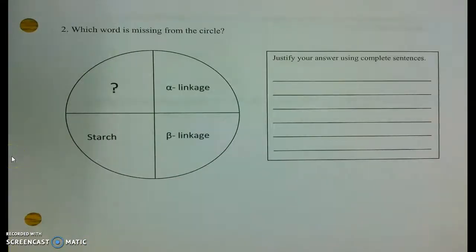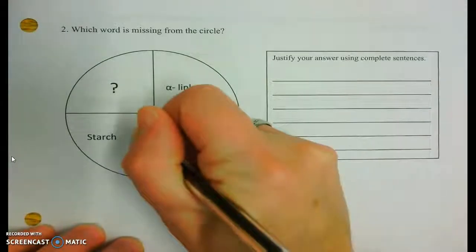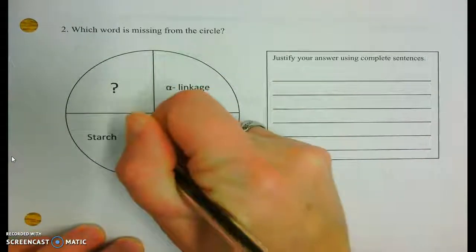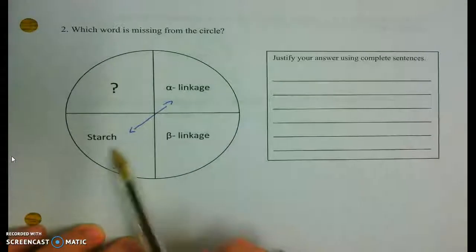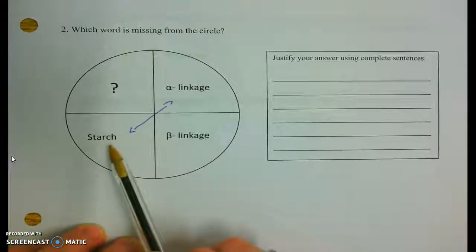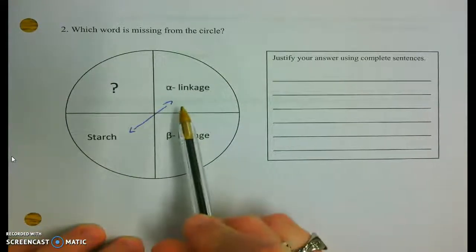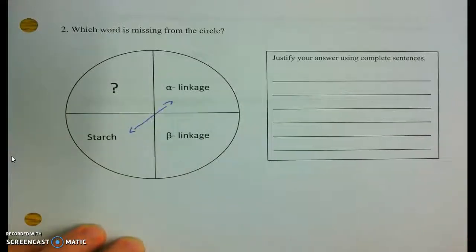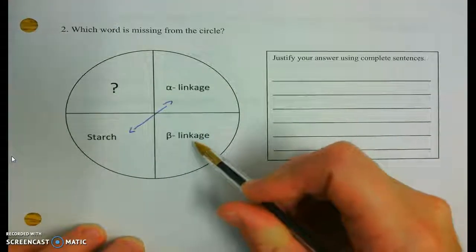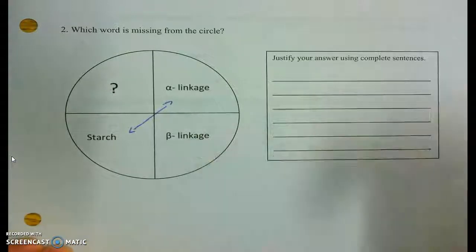What about number two? Which word is missing from the circle? I want to warn you, the relationships actually go diagonally. So we know that starch is going to be the easy-to-break-apart alpha linkage of glucose monomers.